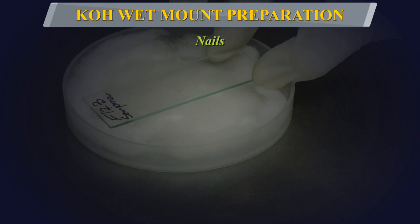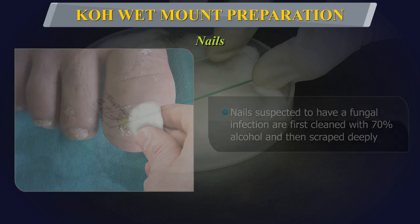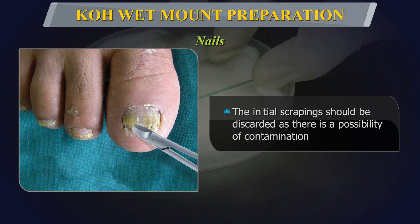Nails: Nails suspected to have a fungal infection should first be cleaned with 70% alcohol and then scraped deeply to obtain recently infected nail tissue. The initial scrapings should be discarded as there is a possibility of contamination.